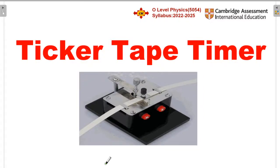Hi everyone, I hope you all are fine. Today we will discuss the ticker tape timer. This is the real image of a ticker tape timer. There is a tape and a machine. When an object moves, it produces a dot on this tape.